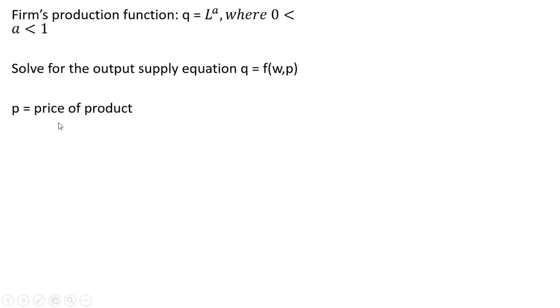So P is the price of the product. Again, this is a price taker. W is the wage.